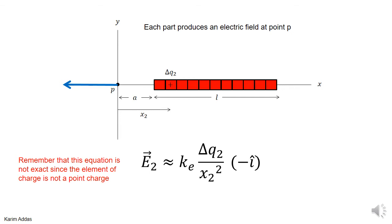The next element of charge, the electric field will be this value. Now x2 is bigger than x1 because it's located farther away from point P. So the value of the electric field or the vector will be a bit smaller because x2 is in the denominator. When x2 is bigger, then the value of the electric field will become a bit smaller.